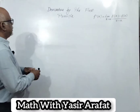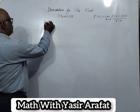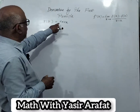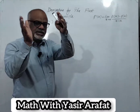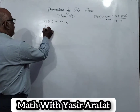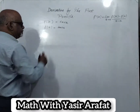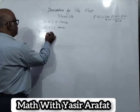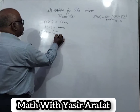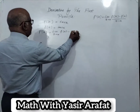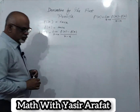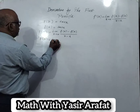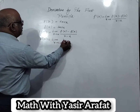By using the first principle, f of x is equal to tangent x. We will find out the derivative of tangent x using the same strategy. First, we put x equal to a, so f of a is tangent a. Now we use the formula: limit x tends to a, f of x minus f of a, whole divided by x minus a.